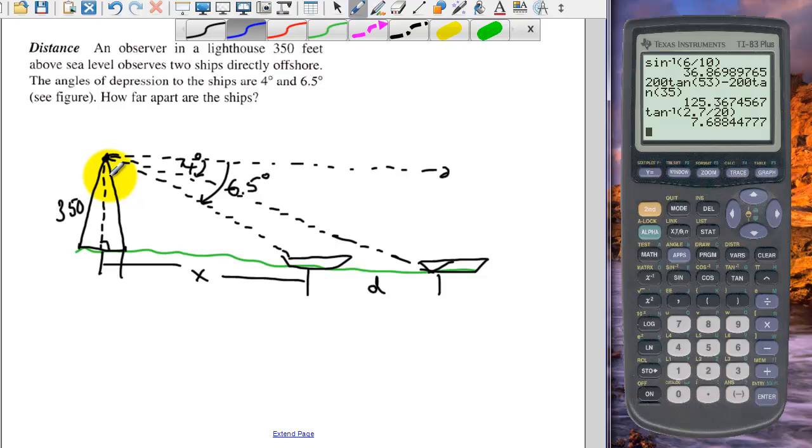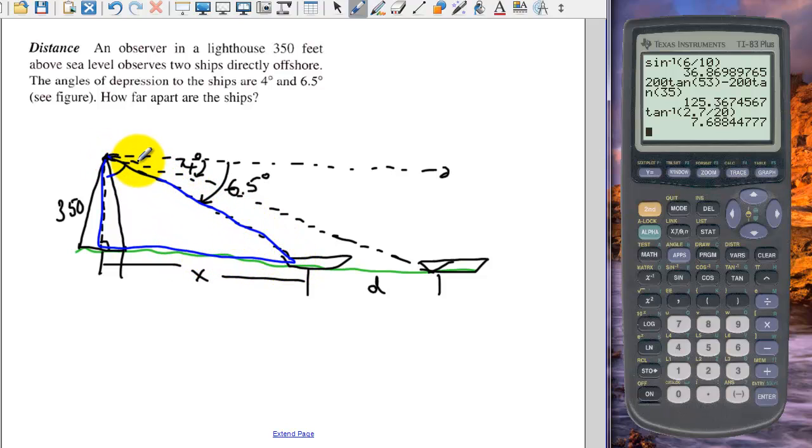Now we need to know this angle here on our blue triangle. So this forms a 90 degree angle. And we have 6.5 here. So if we subtract 6.5 from 90, we have 83.5 degrees.